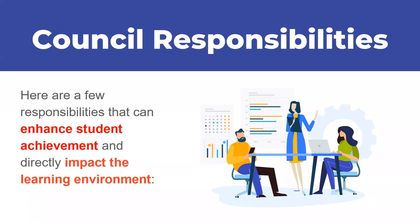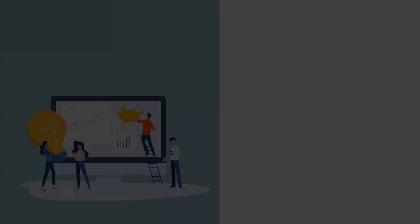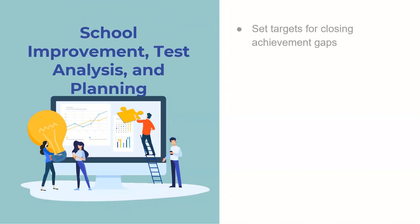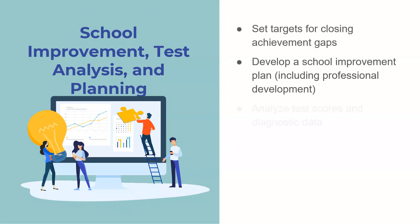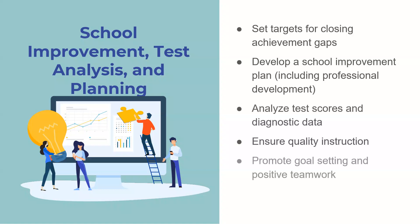Councils have a variety of responsibilities. Here are a few of the responsibilities that can enhance student achievement and directly impact the learning environment. The first way is through school improvement, test analysis, and planning. Councils set targets for closing achievement gaps. They develop a school improvement plan, which includes professional development. They analyze test scores and diagnostic data. They ensure quality instruction, and they promote goal setting and positive teamwork.